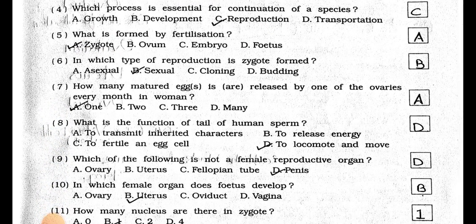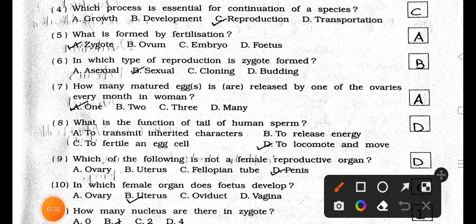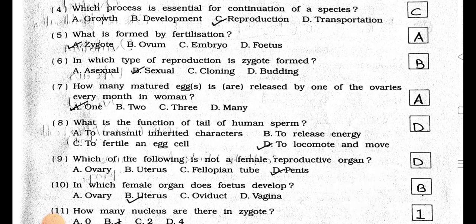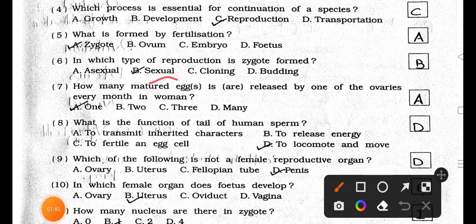Number 6. In which type of reproduction is a zygote formed? A. Asexual, B. Sexual, C. Cloning, D. Budding. Answer is Option B, Sexual.